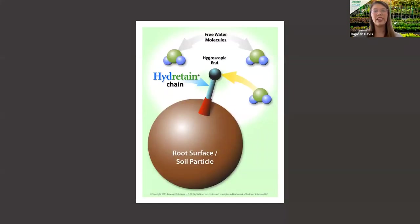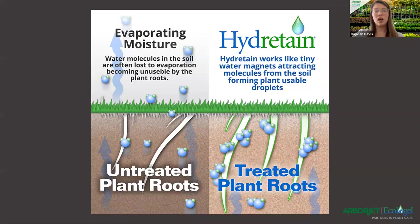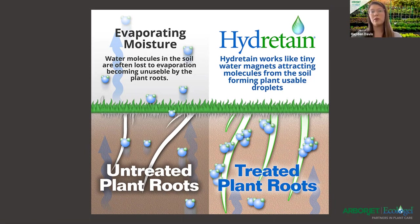Here we see a molecule and how Hydrotain attaches itself to soil particles. Hydrotain is a long chain molecule — you see it there with the little blue arrow — and it attaches itself to a root surface and the soil particles inside. One end is attached and the other end of the molecule acts like a magnet. That's what attracts humidity and forms water droplets inside the soil and brings them into your root system. In this side-by-side, the plant roots on the right treated with Hydrotain are covered with a film that attracts water, while on the left the untreated water molecules are being lost to evaporation.